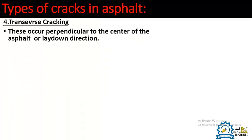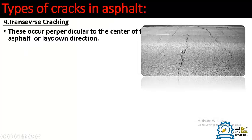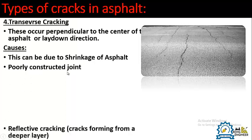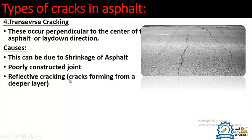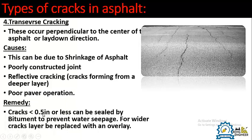Number four is transverse cracking. These occur perpendicular to the centerline of the asphalt or lay-down direction — the cracks appear perpendicular to the flow of traffic. Causes include shrinkage of asphalt, poorly constructed joints, reflective cracking from a deeper layer, and poor pavement operations. The remedy is similar to longitudinal cracking: cracks less than half an inch can be sealed with bitumen to prevent water seepage, and wider cracks should have the layer replaced with an overlay.